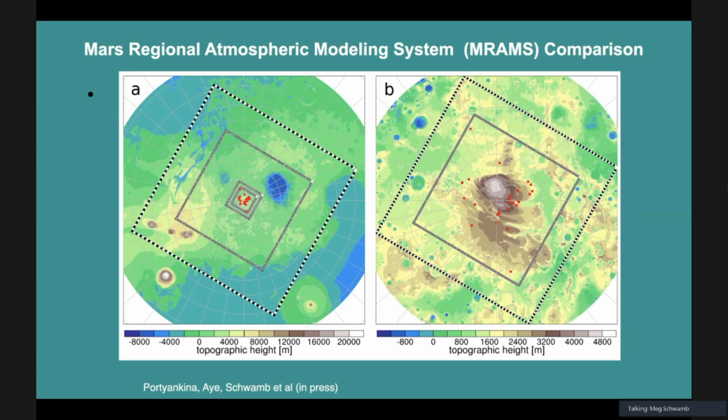We're using MRAMS, which is a modeling system that puts down a high resolution grid down on the South Pole. This is showing a schematic of that on the left and right. This is the larger grid, and nested within that is higher resolution grids that is using as good a topography as we have. Each one of those dots is one of the locations where we have HiRISE measurements and have Planet 4 catalog.